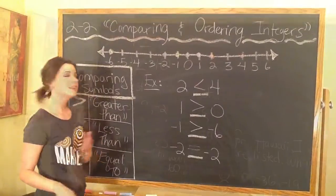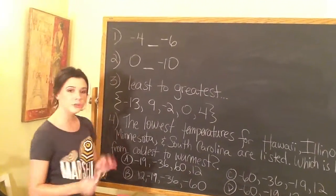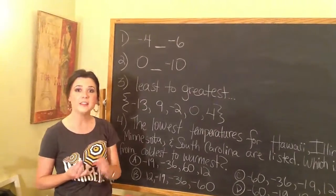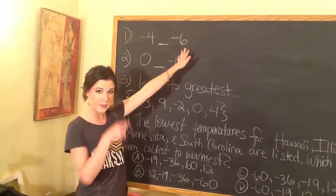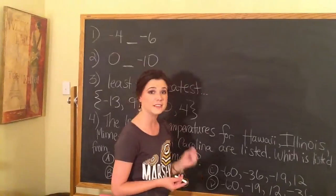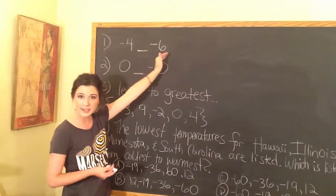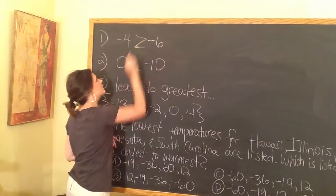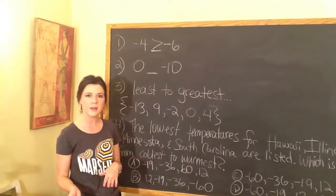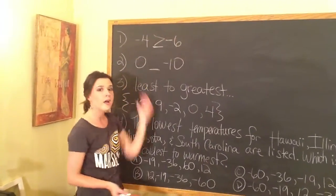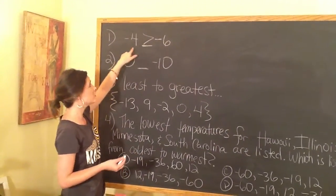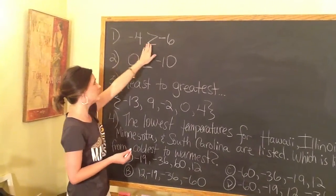Let's do more examples. First, we're given negative 4 and negative 6 and need to compare them. When comparing two negative numbers, the one closest to 0 is the biggest. So which is closer to 0 — negative 4 or negative 6? Negative 4 is closer to 0, so negative 4 is bigger. Usually we'd think 6 is bigger than 4, but since they're negative it's the opposite. We open the symbol toward negative 4, so it reads: negative 4 is greater than negative 6.